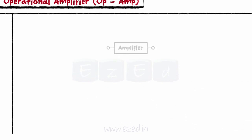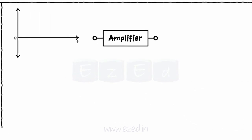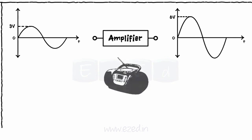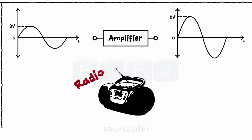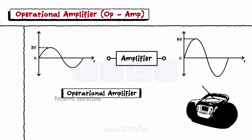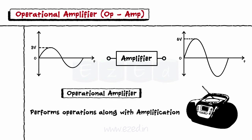An amplifier is a circuit that accepts the input signal and produces the amplified version of that signal at the output. The best example of an amplifier is a radio which we use in everyday life. An operational amplifier is a circuit which performs different operations along with the amplification.